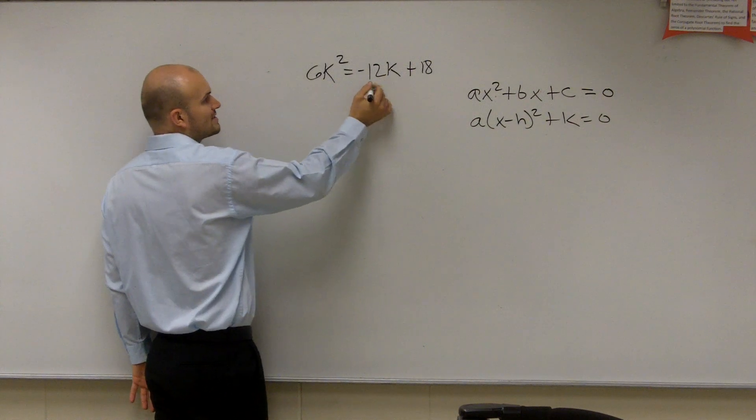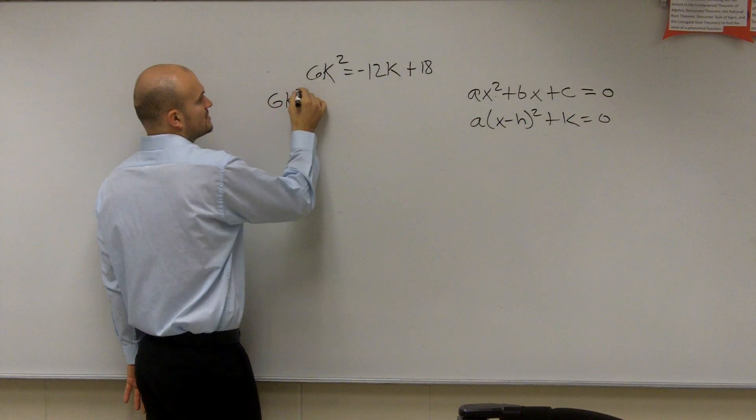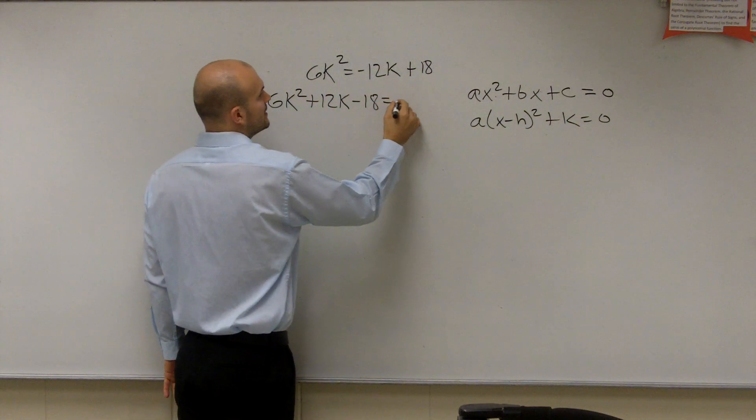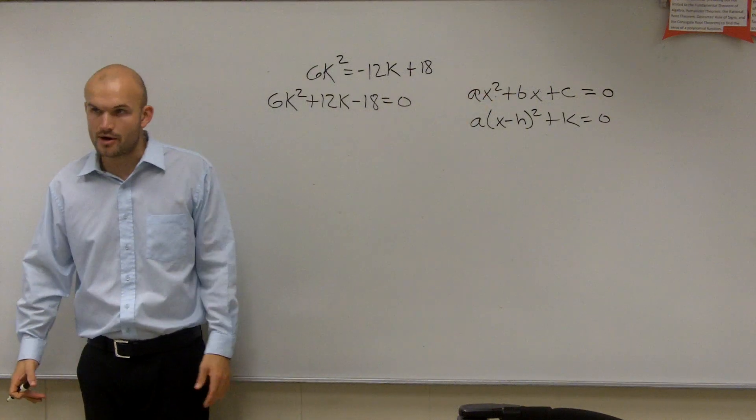So to do that, I'm going to add the 12x on both sides and subtract the 18 on both sides. Therefore, I'll have 6k squared plus 12k minus 18 equals 0. All I'm doing is I'm rewriting it so I have it based in this definition.